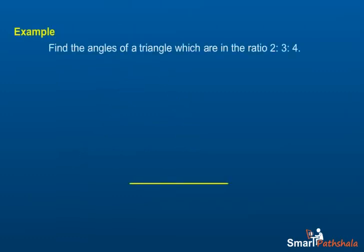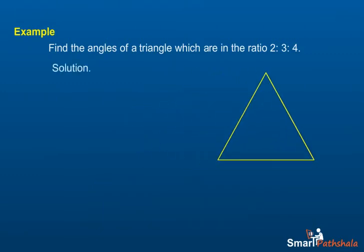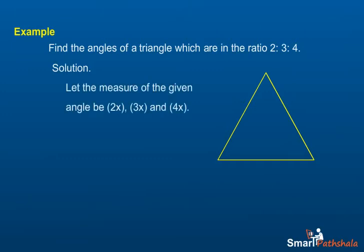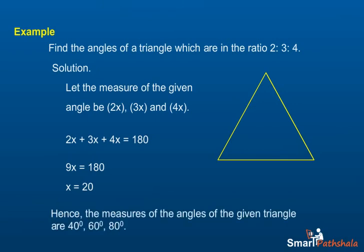Example 1: Find the angles of a triangle which are in the ratio 2:3:4. Solution: Let the measures of the given angles be 2x, 3x, and 4x. Then, 2x + 3x + 4x = 180. Therefore, 9x = 180, so x = 20. Hence, the measures of the angles of the given triangle are 40 degrees, 60 degrees, and 80 degrees.